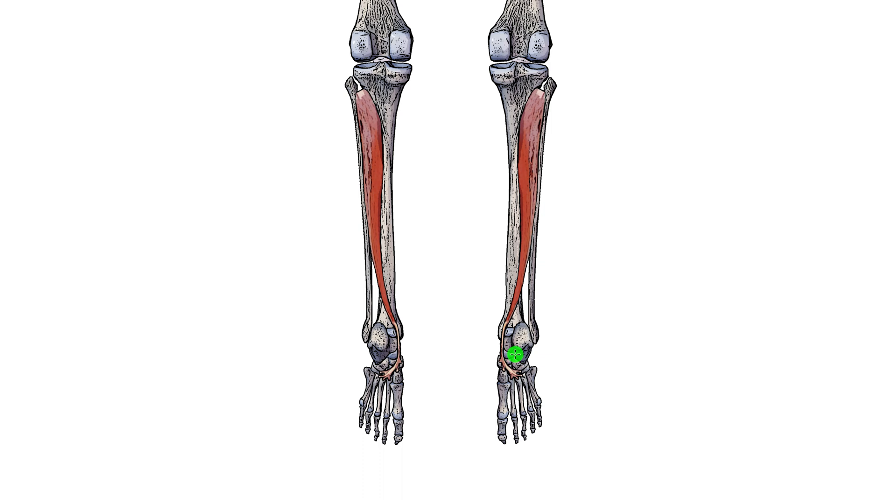So the foot is in a plantar flex position at the moment, so the ankle joint is extended. Here's the heel bone. So essentially the feet are just dangling down so I could better show you where it's connecting to underneath the foot. But we'll go over the exact insertions in just a moment.